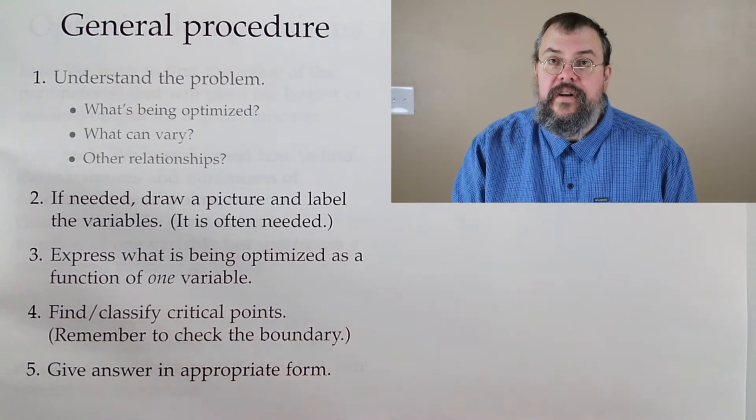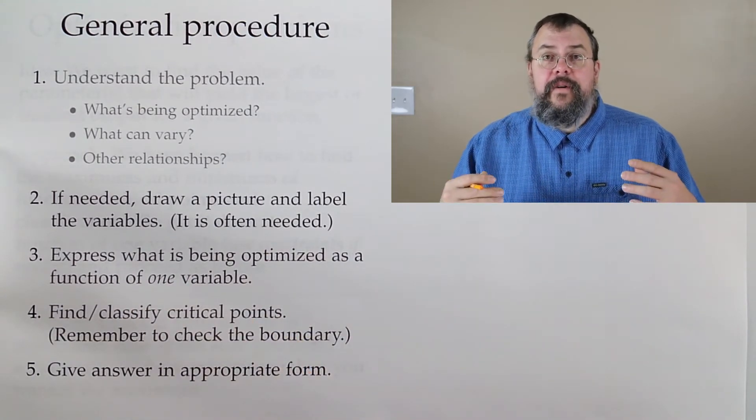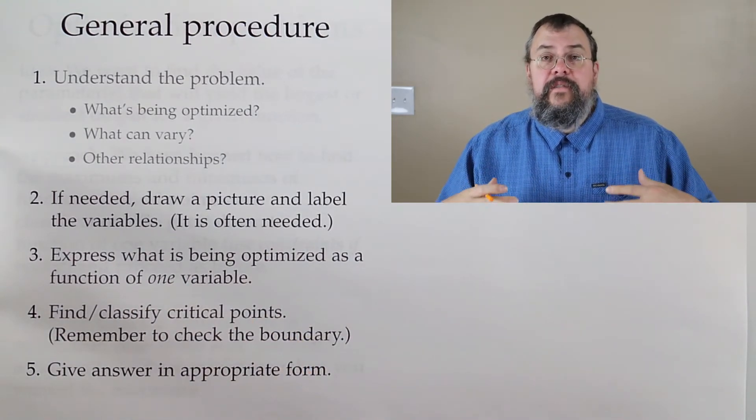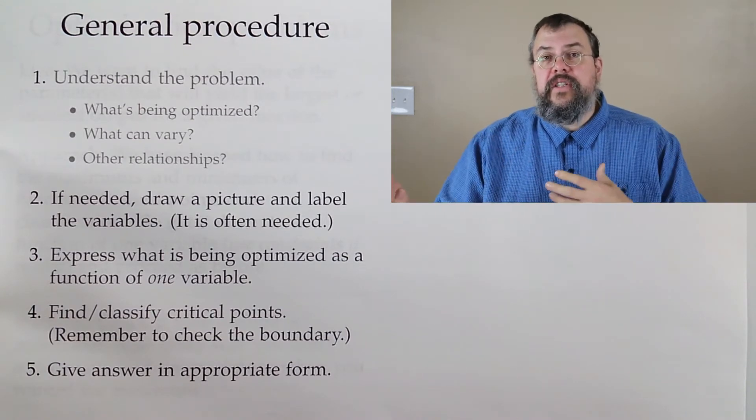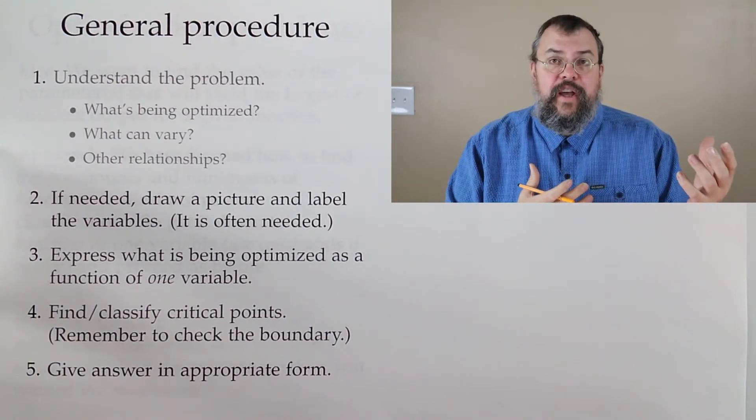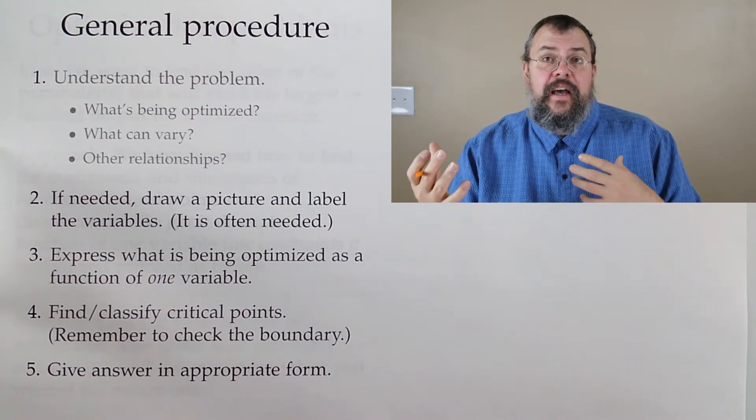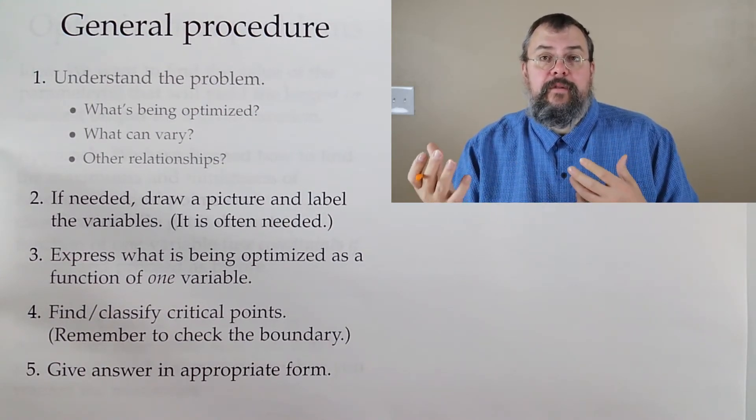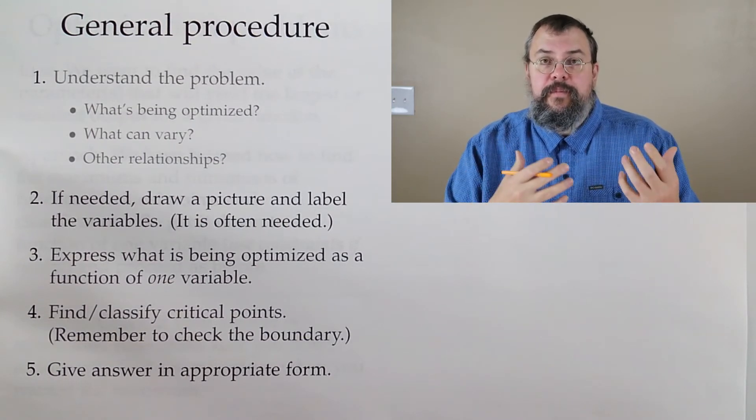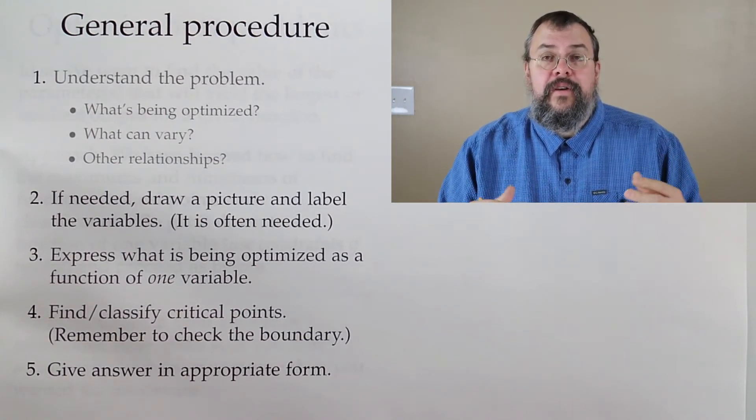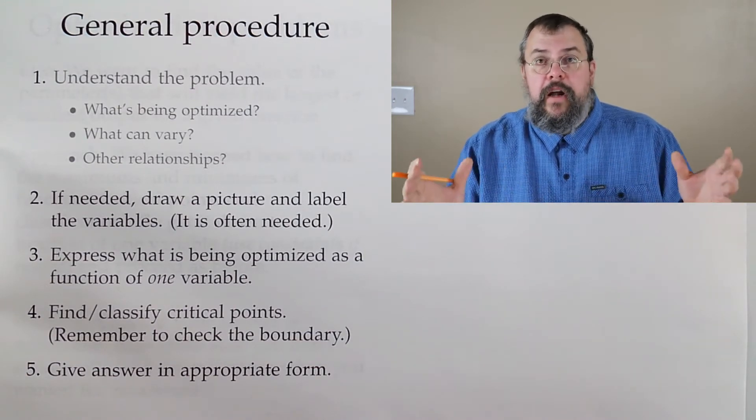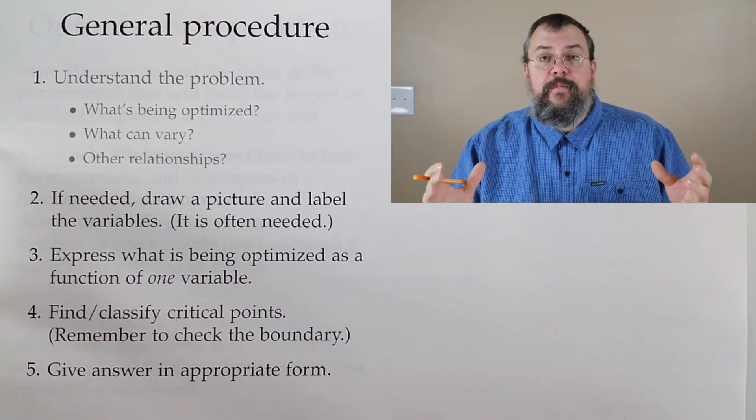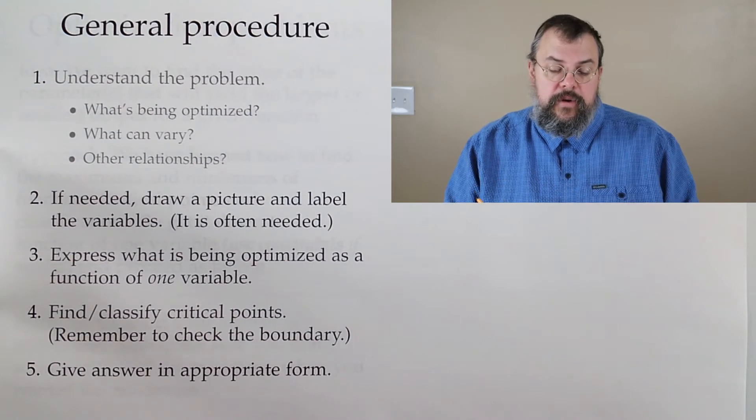Draw a picture. A lot of optimization problems have a visual aspect. Once you see the picture, you can say, 'I see where the tradeoff is happening,' and you can connect what you're trying to optimize with what you're allowed to vary, which helps us find a formula. Try to draw a picture as often as you can. Not all problems allow for a picture, but when they do, you should do it.